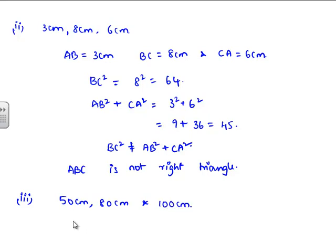Let us assume that these are the sides of right angle triangle ABC, with AB equal to 50 cm, BC equal to 80 cm, and CA equal to 100 cm.